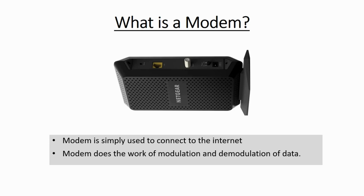Telephone wires can carry only analog signals, whereas a computer is a digital machine and it has digital signals. So analog signal and digital signal are two different types of signals. Before we understand modulation and demodulation, let us understand these signals first: analog signal versus digital signal.